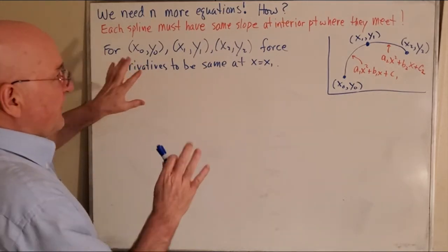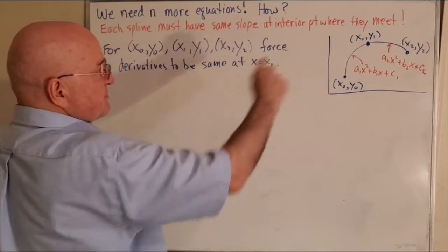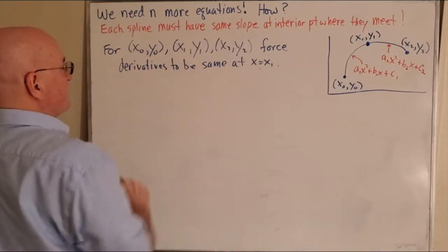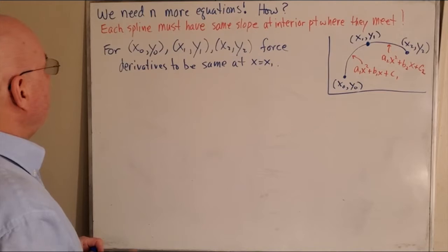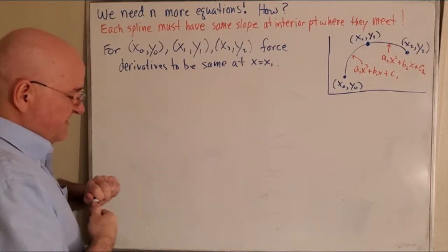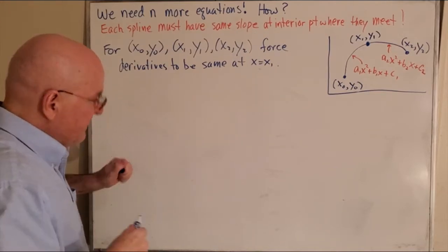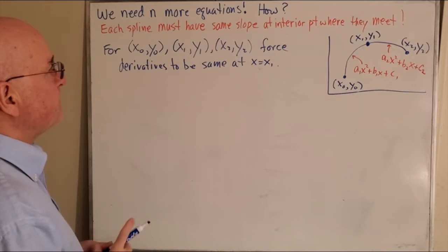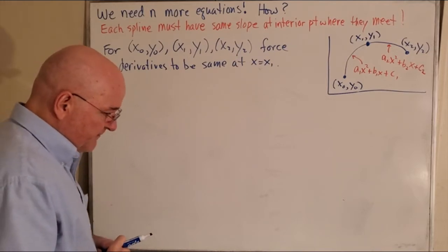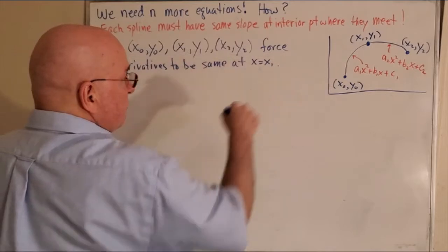So for example, we'll take just these first three points: x0 y0, x1 y1, x2 y2. We're going to force the derivatives to be the same at xi. So let me write down both of those equations.